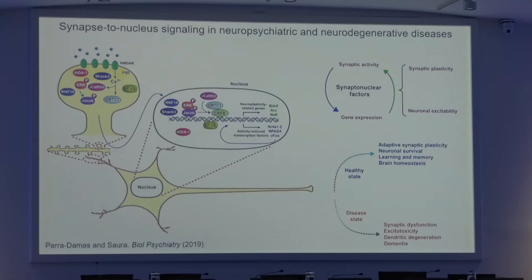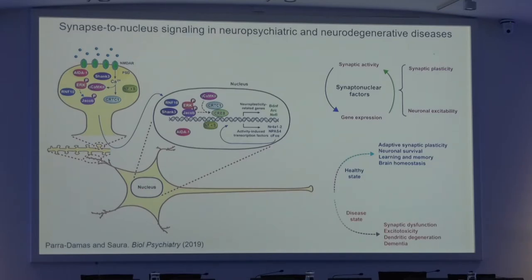Some of these factors you may recognize as involved in familiar cases of autism, such as SHANK, and also in schizophrenia. Here is CRTC1, which we studied in the context of Alzheimer's disease. The role of this synapse-to-nuclear signaling in the context of neuropsychiatric, neurological, and neurodegenerative disease is still unclear.